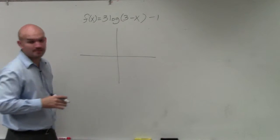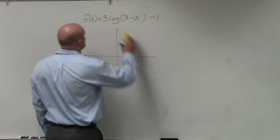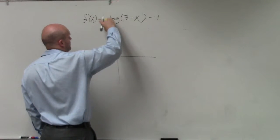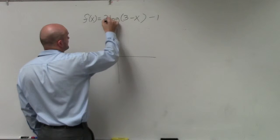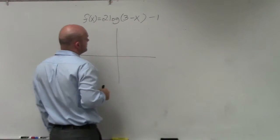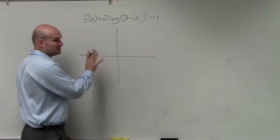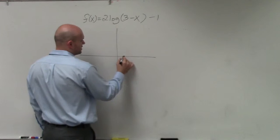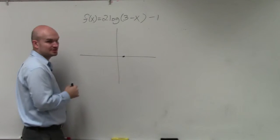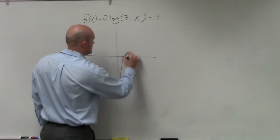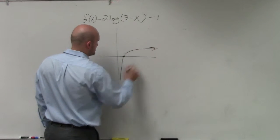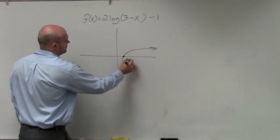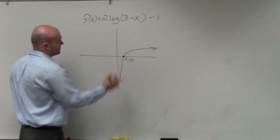It's 2 log? So first of all, let's just graph what the normal logarithmic graph looks like. It crosses at — I'm sorry — it crosses at 1 comma 0, and just looks something like this.